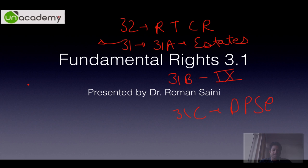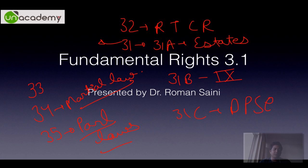Then we have Article 33, Article 34, and Article 35. Article 35 deals with the parliament having the power to enact certain laws for the fulfillment of fundamental rights. Article 34 deals with martial law, that is military law, and when it will be applicable. Article 33 deals with police, paramilitary forces, Navy, Army, etc., and when there will be restrictions on fundamental rights of those personnel.